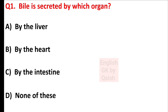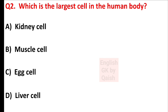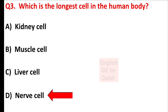Your first question is: bile is secreted by which organ? Answer is option A — by the liver. Which is the largest cell in the human body? Answer is option C — egg cell. Which is the longest cell in the human body? Answer is option D — nerve cell.